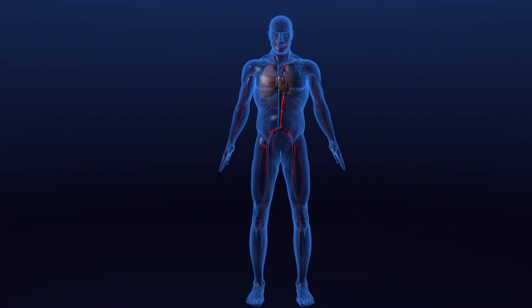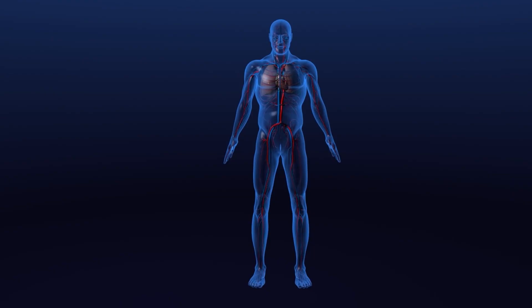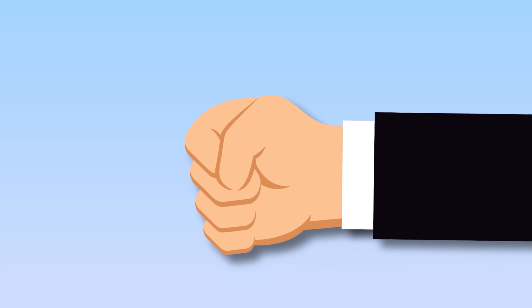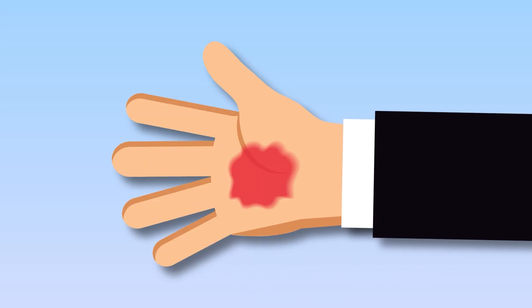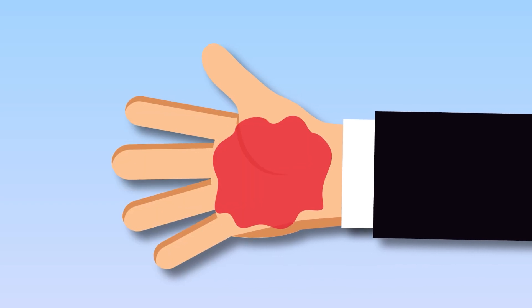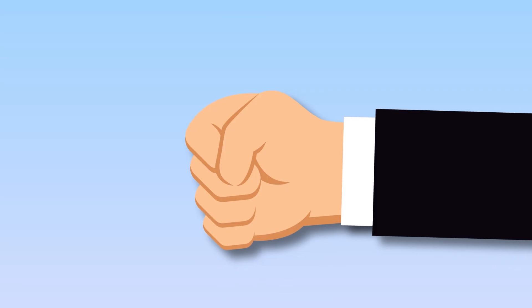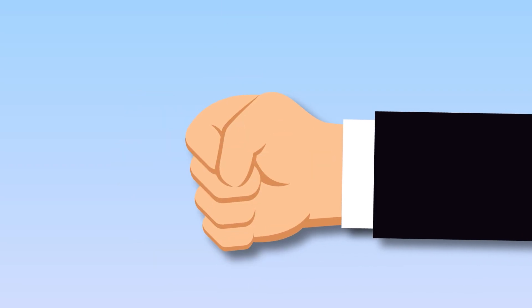Finally, the heart sends this oxygenated blood through the fourth and last valve towards the rest of the body — and then it starts again. To understand how our heart beats, imagine that your hand is a heart: when it opens up it fills with blood, and when it closes it pumps that blood outwards.